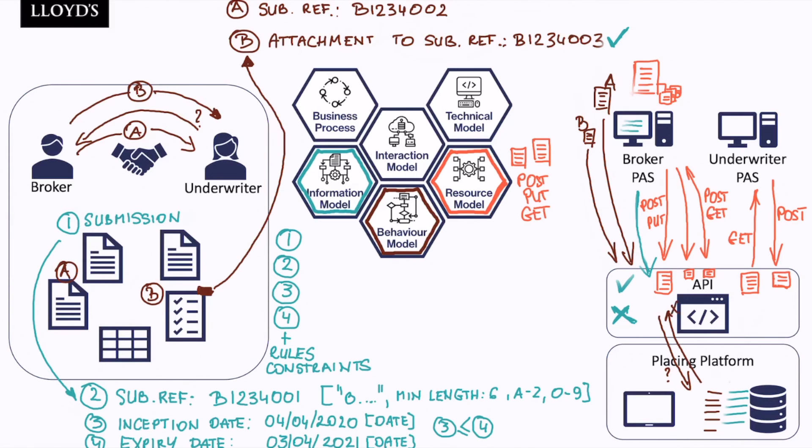And as a result, API returns the error that the additional document record has not been created, providing specific error message back to the broker system. For example, no such submission reference exists—cannot attach to non-existing submission record.